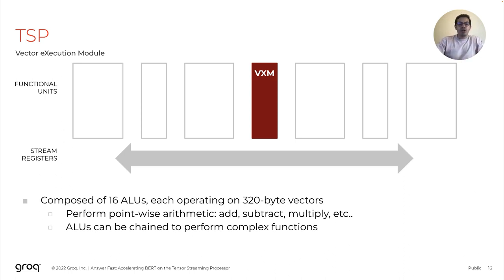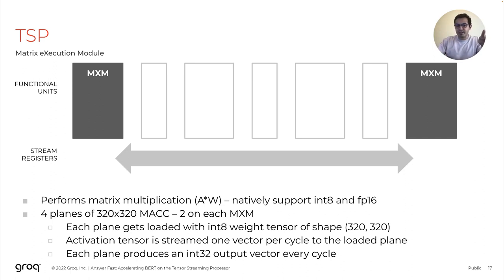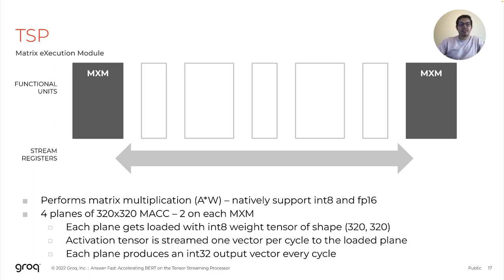One key feature we heavily leverage in our implementation is that these ALUs can be chained together to form a more complex function without the need to go out to memory or anywhere else. Last, but by no means least, is the Matrix Execution Module, or MXM — that's really the powerhouse of the TSP, where we do matrix multiplication. It natively supports INT8 and FP16 operands, and we have two modules, one in the east and one in the west. Each module has two planes, and each plane has a 320×320 multiply-accumulate array. When doing INT8 multiplication, we load a weight tensor into this plane and stream activation vectors in — the plane consumes one activation vector every cycle and produces an INT32 output vector every cycle after some latency.